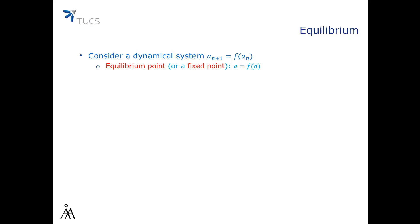Let's take a general dynamical system where the transition from state An to state An+1 is through function f. A is called an equilibrium point or a fixed point of the dynamical system if A equals f(A).